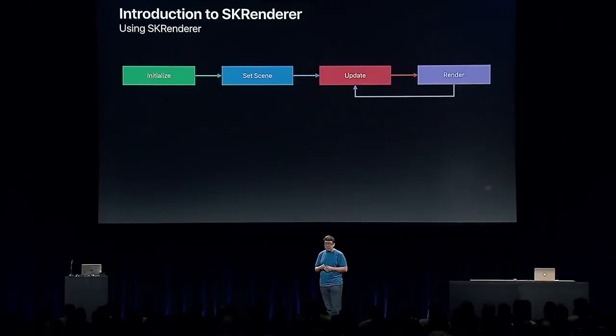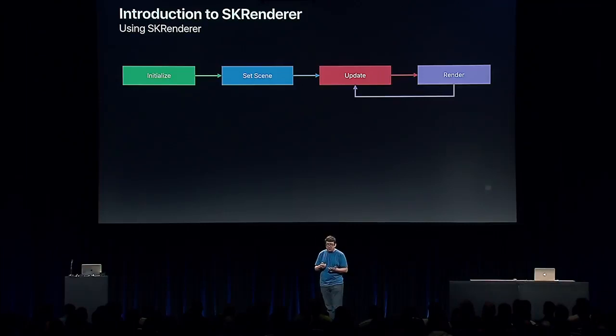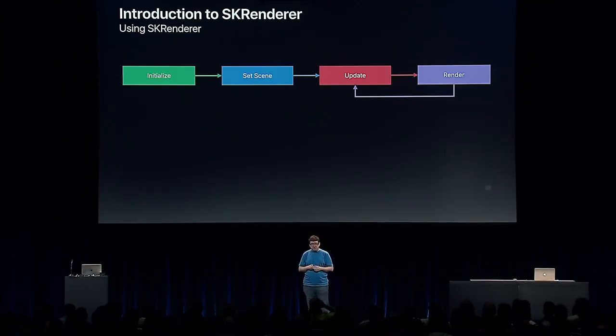There are four stages to using SKRenderer: initialization, setting the scene, updating, and rendering. Initialization occurs once. You set your scene at the start and again when you want to transition to a new scene. Update and render repeat every frame in your app.